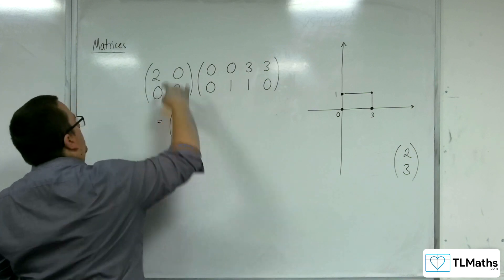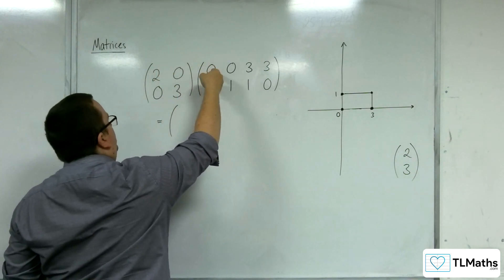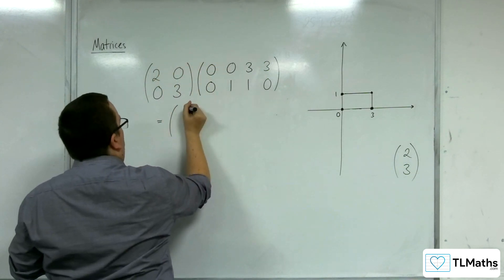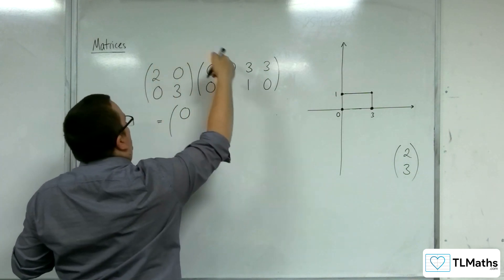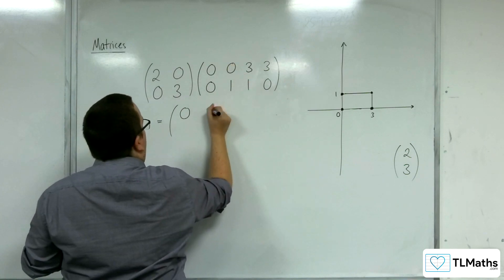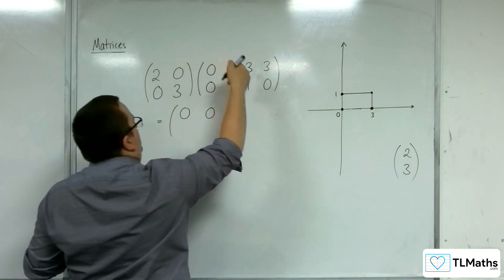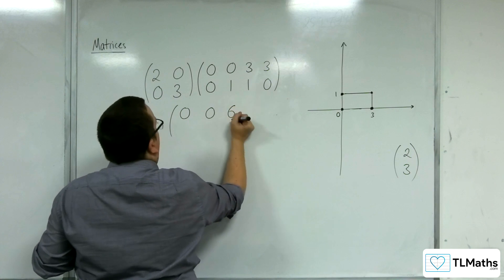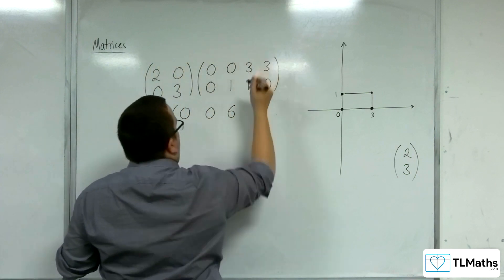So we have 2, 0, 0, 3 multiplying our coordinate matrix. 2, 0 multiplying with 0, 0, that's 0. 2, 0 multiplying with 0, 1, that's 0 again. 2, 0 times 3, 1, well that's 6. 2, 0 times 3, 0, that's 6.